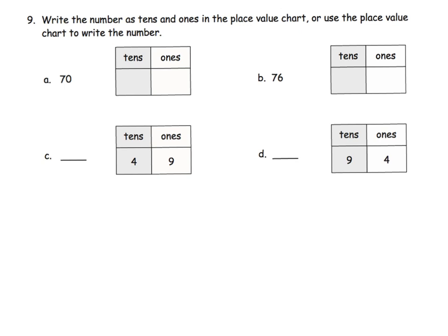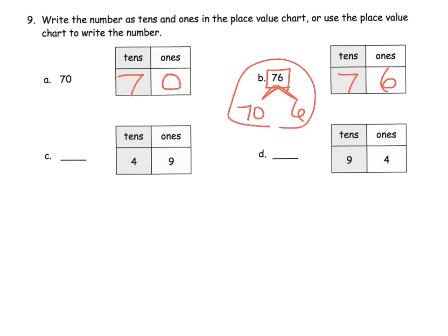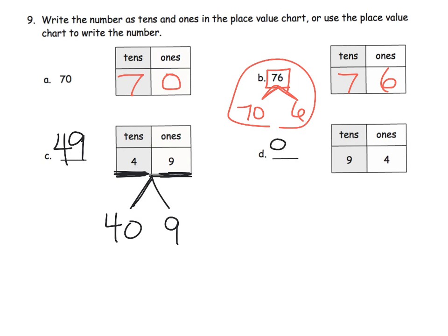Now we're removing the scaffolding — no pictures at all. We're going from numbers into the place value chart, and from the place value chart back into the number. If we have the number 70, that means we have seven tens and no ones. If we have the number 76, we have seven tens and six ones. Remind your students: 76 means 70 plus six — though that part is optional and just adds to the understanding. Next, four tens and nine ones means we have 49. Help your students understand that the four means we have 40, and the nine means we have nine, so we have 40 plus nine. And the last one is 94.